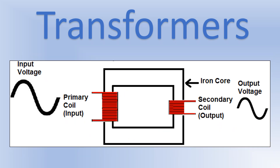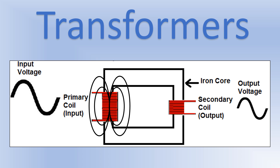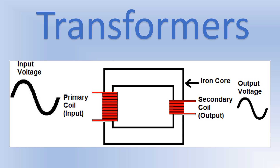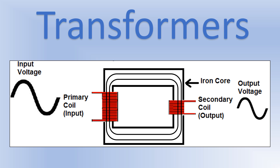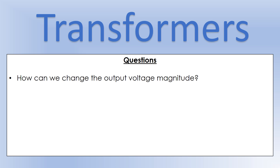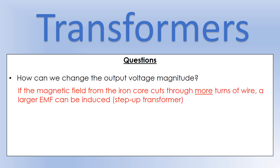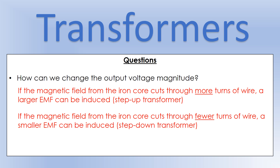The alternating current or field around the primary coil turns the core into an alternating field, which induces the current in the secondary — that's the idea. To change the output voltage magnitude: if the iron core magnetic field cuts through more turns of wire on the secondary side, you induce a larger EMF — that's a step-up transformer. If you reduce the number of turns on the secondary side, the field cuts through fewer turns and gives a smaller EMF — a step-down transformer.